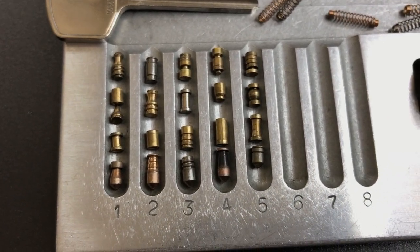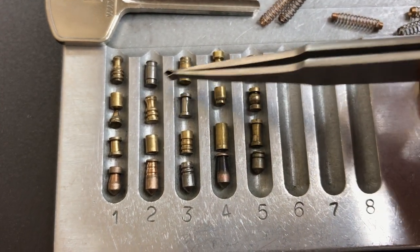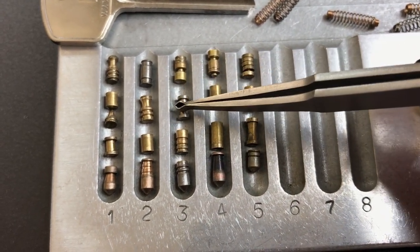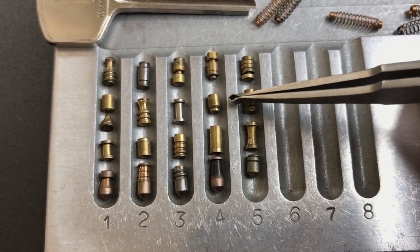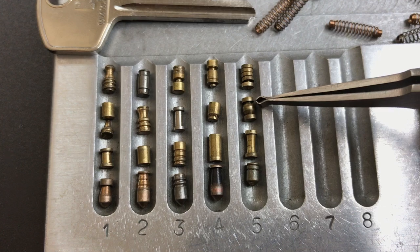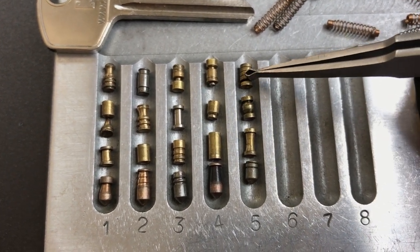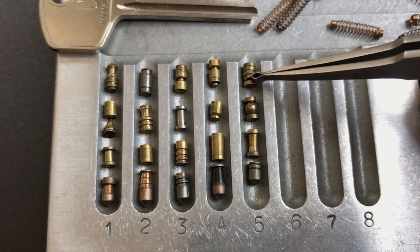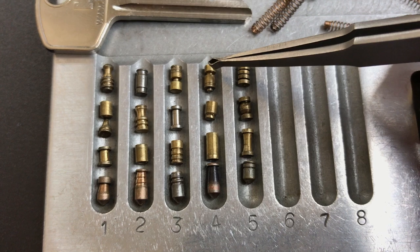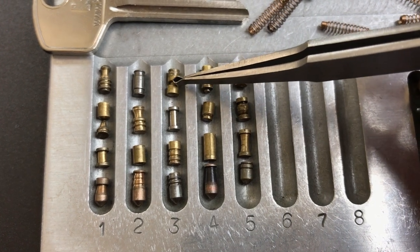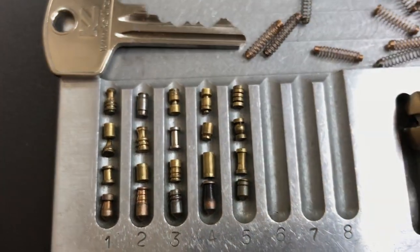Then in number two, we have this drunken spool over here, a homemade serrated, a standard commercially available pin, this looks like just a modified standard with a narrow end, and then this double spool here. And then in the third bible, we get the real big guns here. We have this ringed spool right here, we have a two-part pin-in-pin in number four, another two-part pin in number three, an ASSA spool, and a homemade serrated.